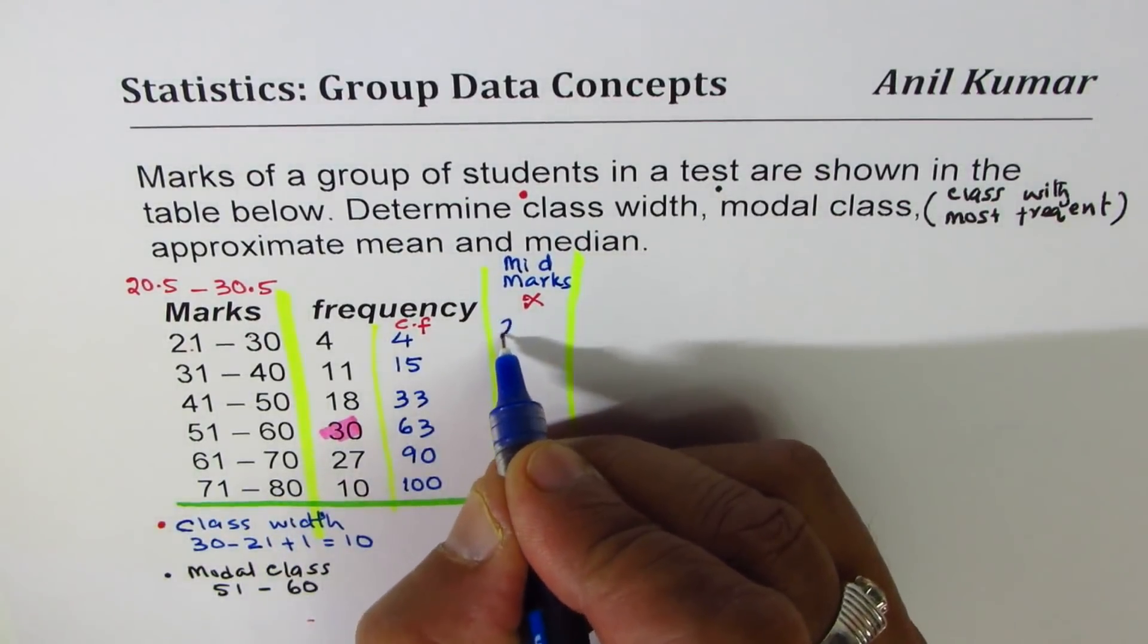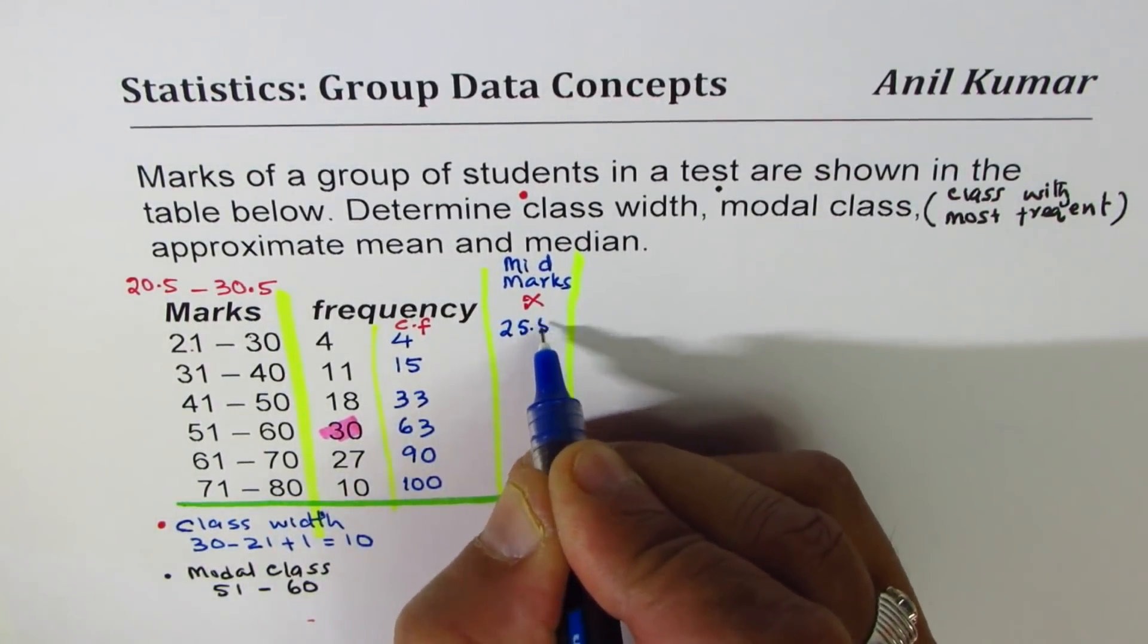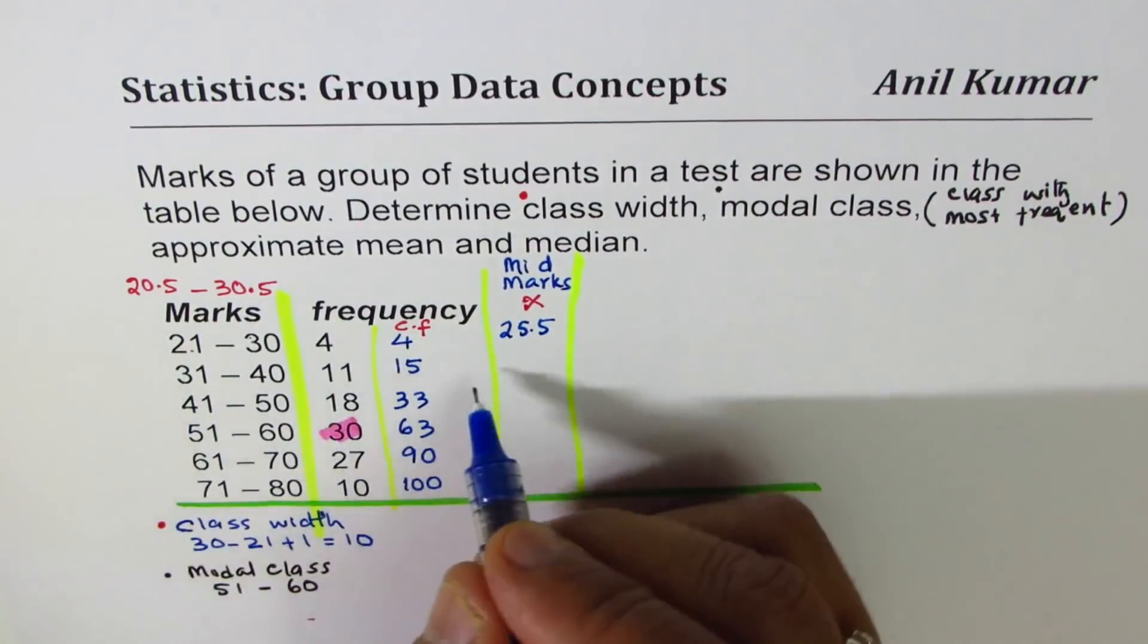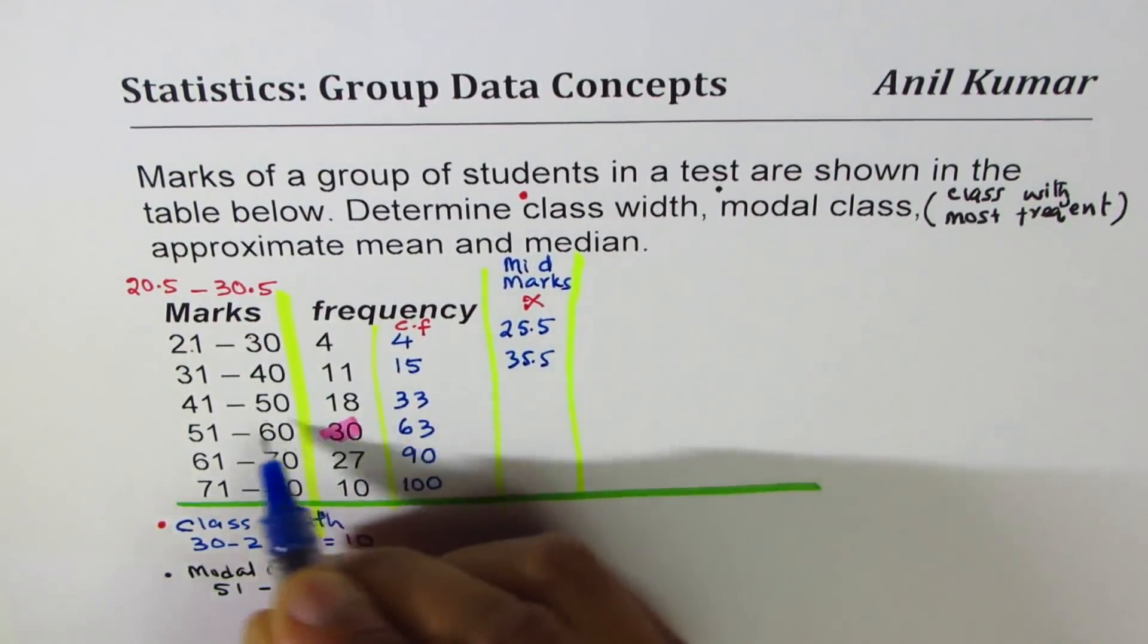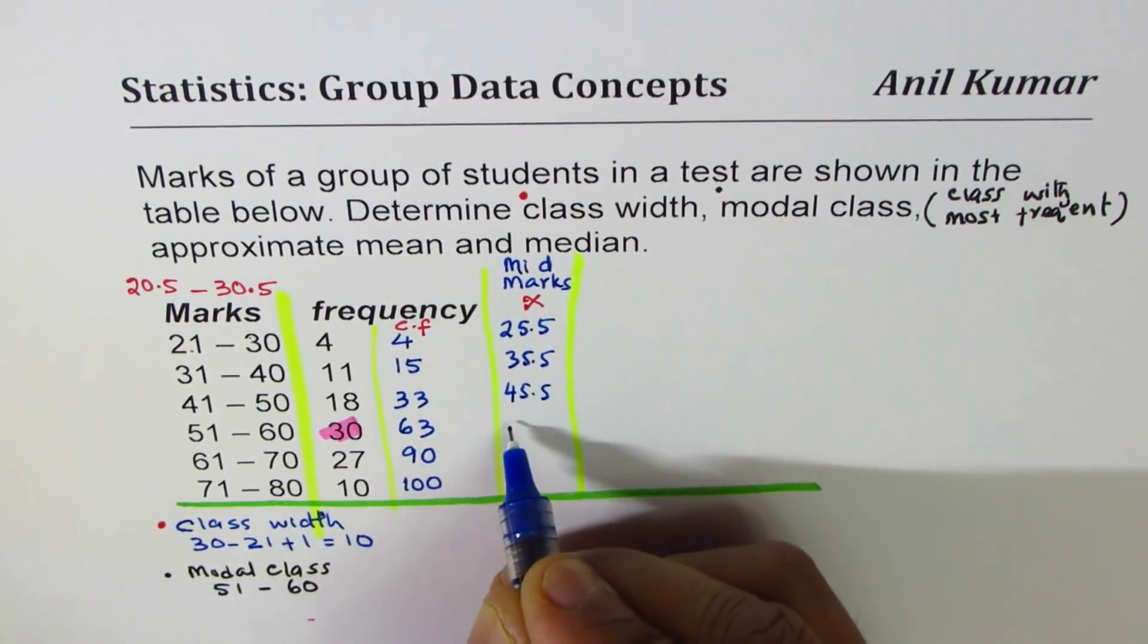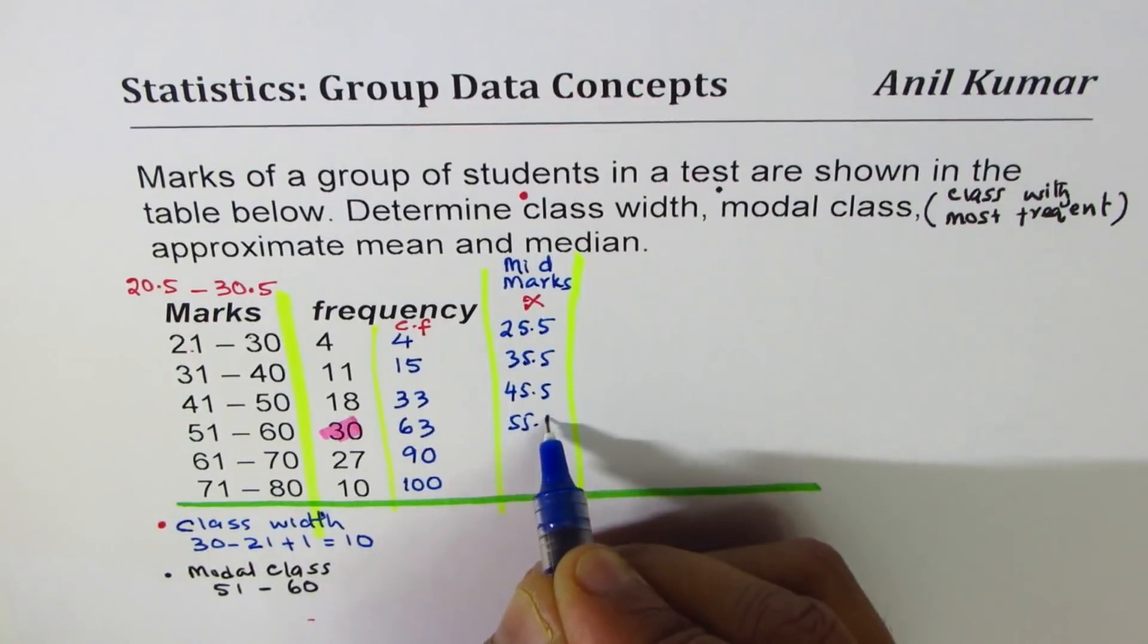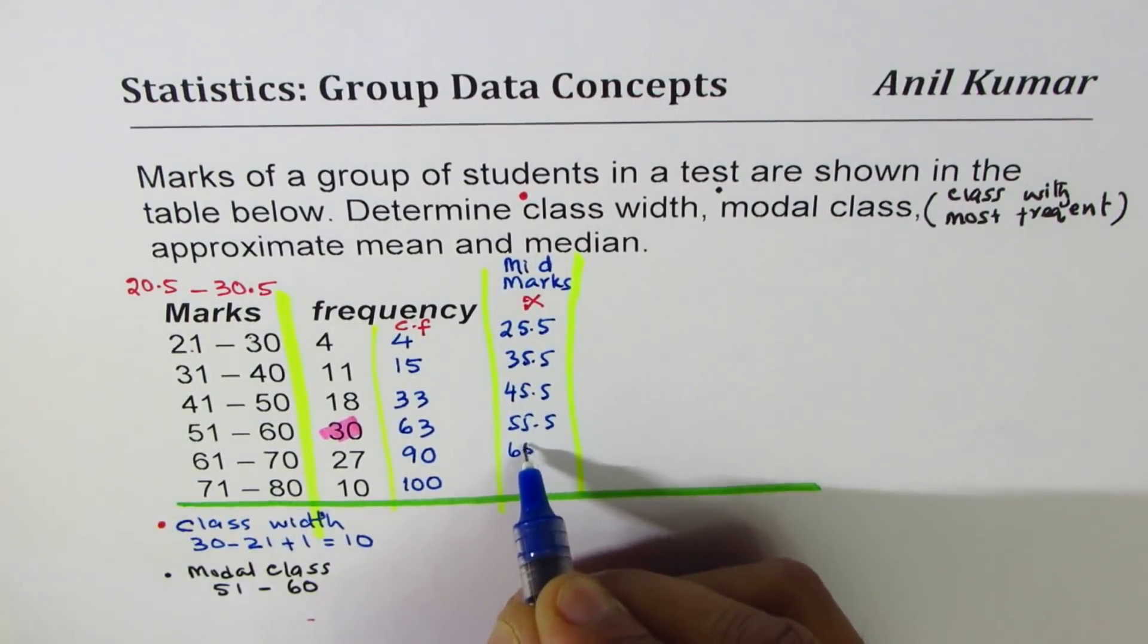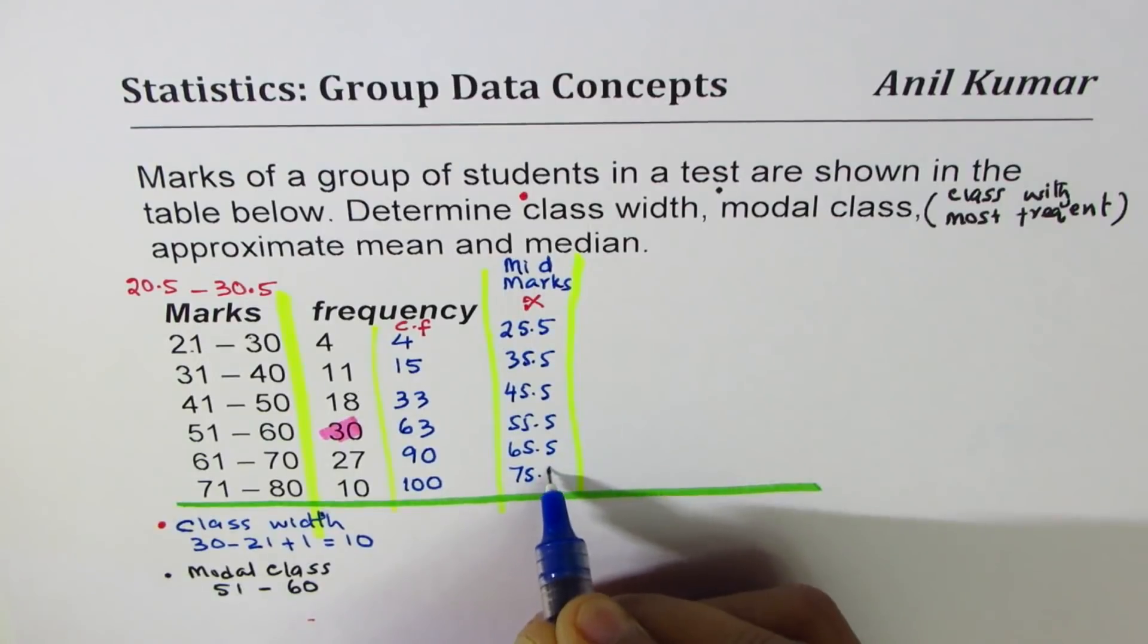Let's call it as x. So add them divide by two. What do you get? You get 25.5 is the mid value here, 35.5 for the next one, 45.5, and then we have 55.5, 65.5 and 75.5.